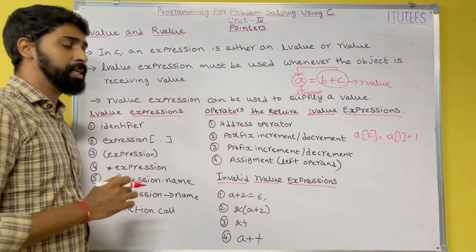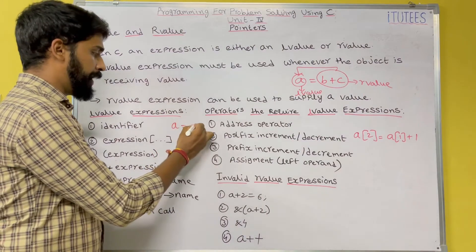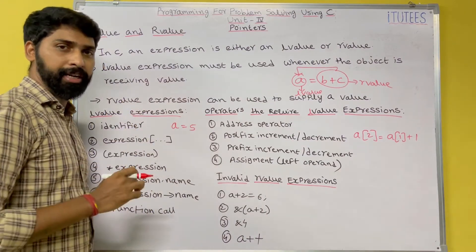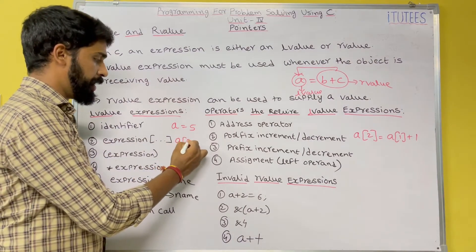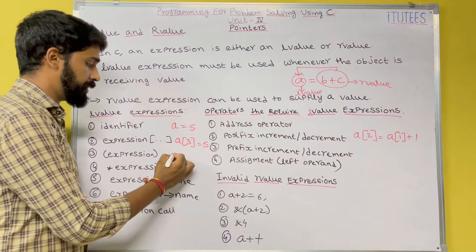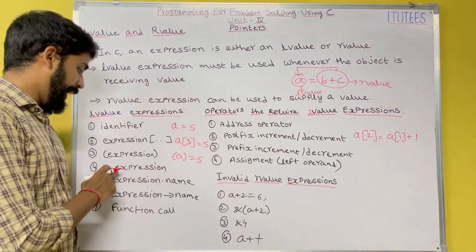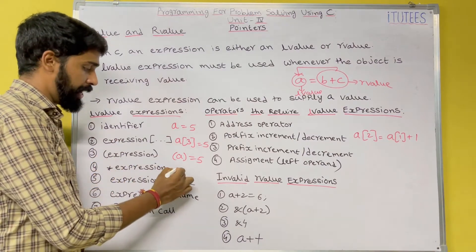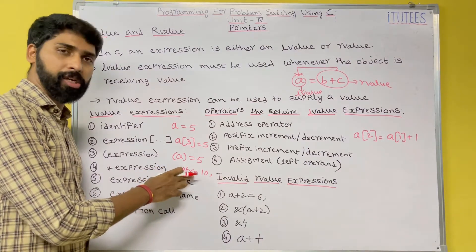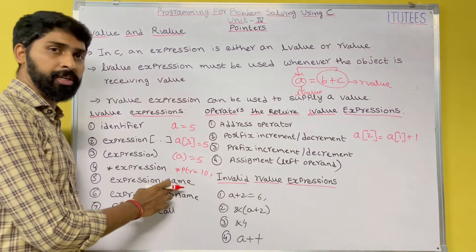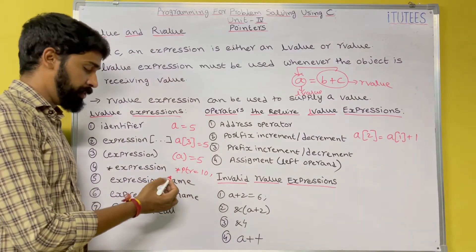So 'a = 5' is an identifier expression. Similarly, 'a[3] = 5' is an array subscript expression. Then we have the dereference expression: '*ptr = 10' — that is, asterisk of ptr equals 10. These are all valid l-value expressions.